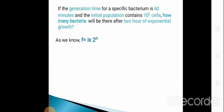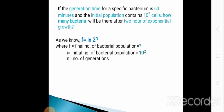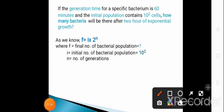To solve this question we have to consider the formula: F = I × 2ⁿ, where F is the final number of bacteria that we have to calculate, and I is the initial number of bacterial population, which is 10² cells.